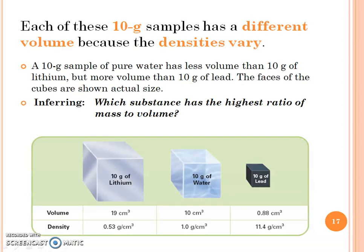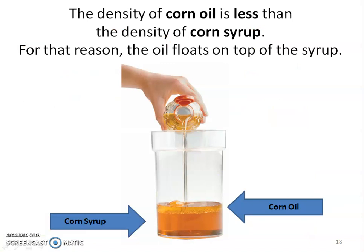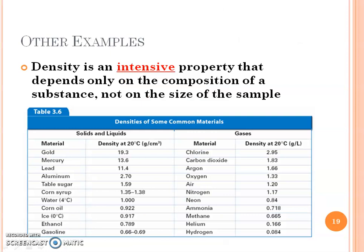I'll show you that in a moment. Pause, read this over, and see if you can come up with an answer - which substance, lithium, water, or lead, would answer this information. I just thought this was neat that corn oil is actually less dense than corn syrup, and that's why the corn oil is floating on top of that corn syrup. Here are other examples of density and how it's intensive. If we think about gold, the gold ring has a density of 19.3, and the gold bars also have a density of 19.3. See how dense your metals are versus how non-dense ice and gasoline are.